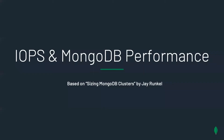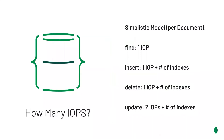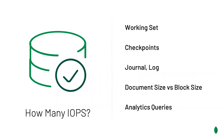Now let's talk about IOPS and MongoDB performance. We can take a simplistic model that assumes each find operation takes one IOPS plus the number of indexes to update, and each update operation takes two IOPS plus the number of indexes to update. This is likely the upper bound of available IOPS, though this number will be heavily influenced by the working set, WiredTiger storage engine checkpoints, the journal and the log, and the document size as compared to the block size, as well as the presence of aggregation or analytical queries.